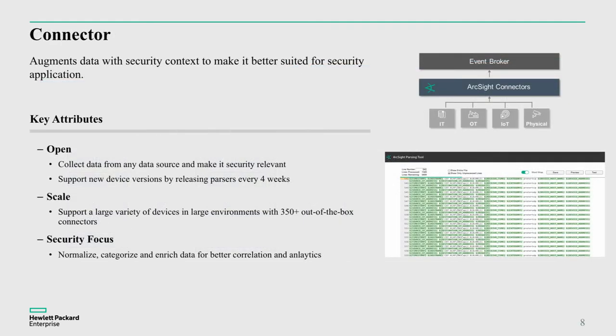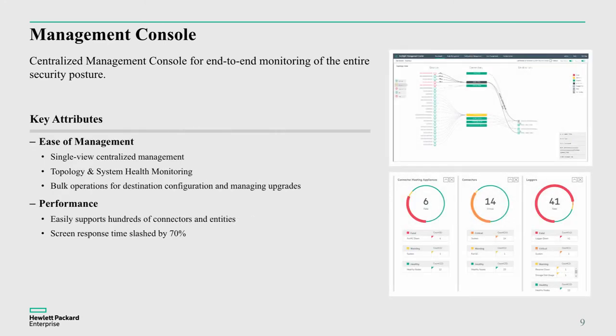Those connectors are important as they feed up into the Event Broker — allowing us to connect from data sources, scale easily with over 350 out-of-the-box connectors as standard, and do so in a secure, predictable, and reliable way. On the management side, ArcMC — ArcSight Management Center — provides a central point of access and view across the infrastructure. It gives centralized management, topology and system monitoring, bulk operations for configuration changes, and management of collection components down to the Event Broker itself. As you can see in the screenshots here, this is presented in a very easy-to-view application interface.